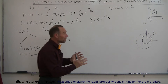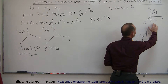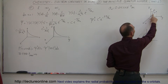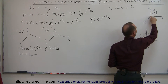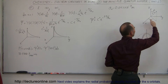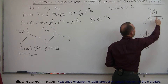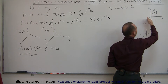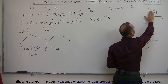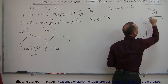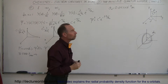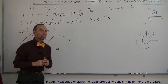An atom is a three-dimensional thing, and we can define it in spherical coordinates as a point away from the nucleus, which is the radius, a point relative to the x-axis, an angle away from the axis, and a point relative to the z-axis. So we have these two angles and the radius defining a point in space around the nucleus of an atom.